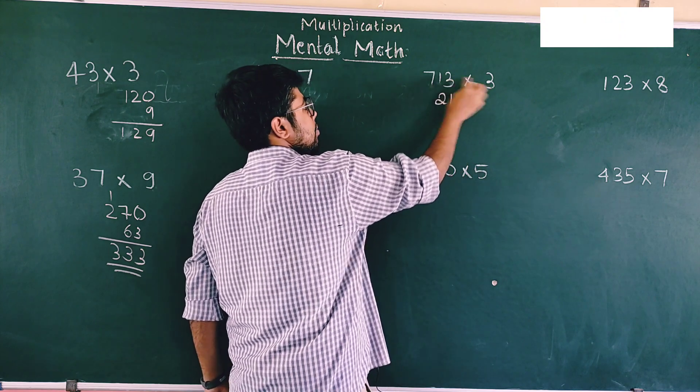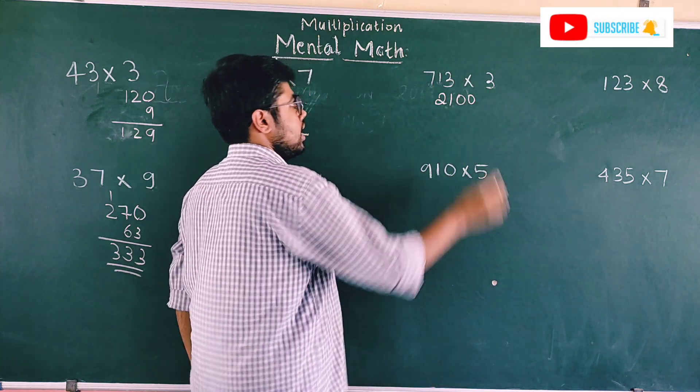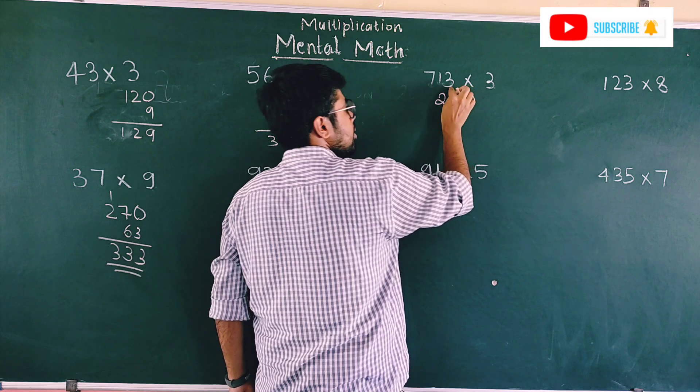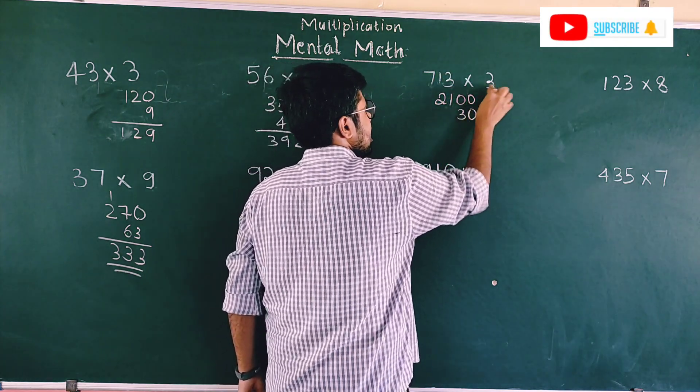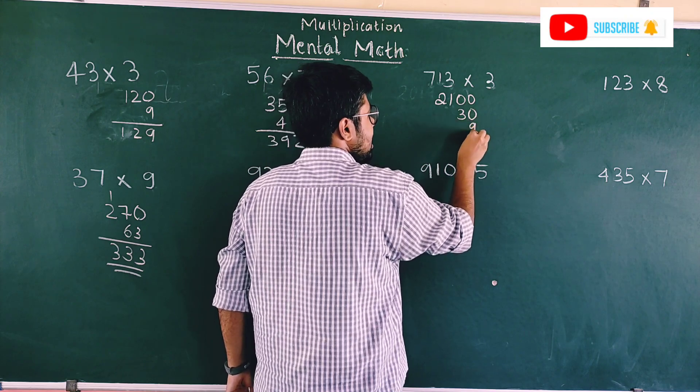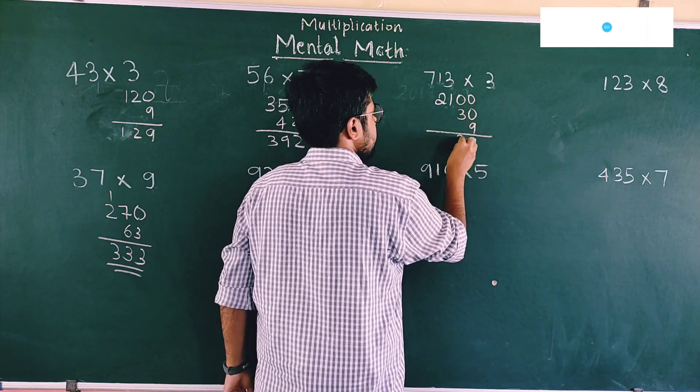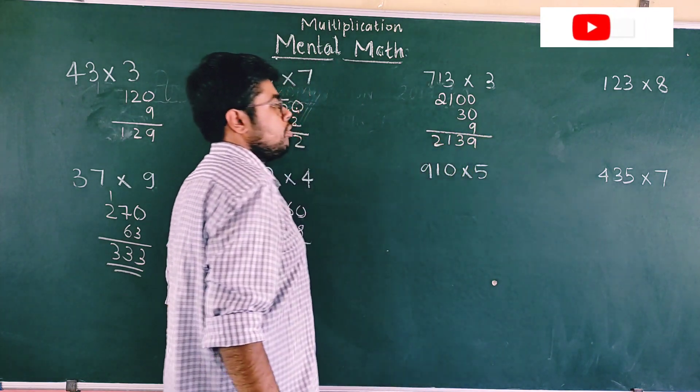Next, after multiplying 7 times 3 is 21, then put 2 zeros. Then again 3 times 1 is 3. Put 1 zero because there's 1 more number after 1, so it's 30. Then again 3 times 3 is 9. So just add: 2139 would be the right answer.